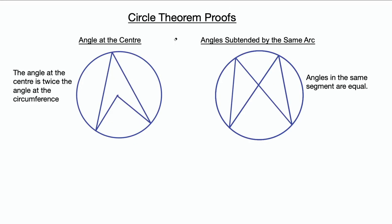Let's talk about how to prove this. One way to help remember how to prove a lot of these theorems is you generally need to add something in. For this one we're going to add in another radius from the center of the circle to the angle at the circumference. This creates two isosceles triangles because these are all radii of the circle, so these sides are all equal. Therefore the base angles of each triangle are equal.